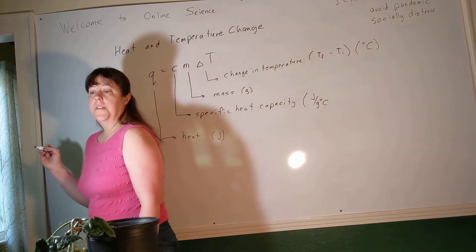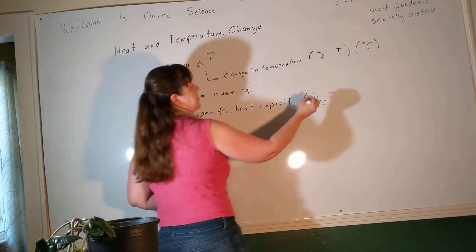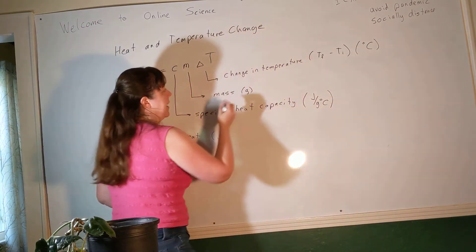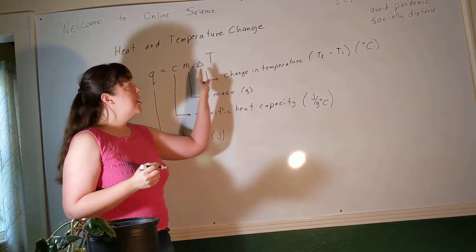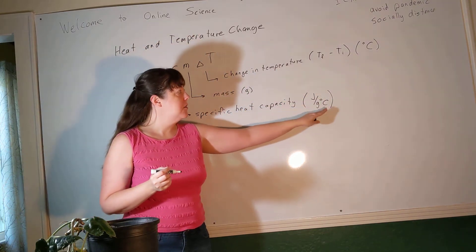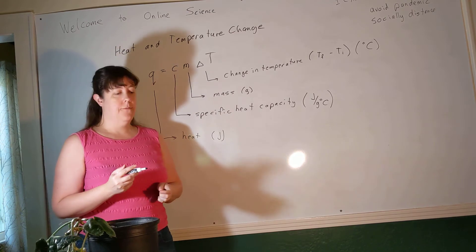And if we think about the units of everything in this reaction, these units here are joules per gram degree Celsius. We're going to multiply by a mass in grams, which will cancel out those grams. We'll multiply that by that change in temperature in degrees Celsius, which cancels that degree Celsius. And the units we're left with is joules, which is what we ought to have for heat.